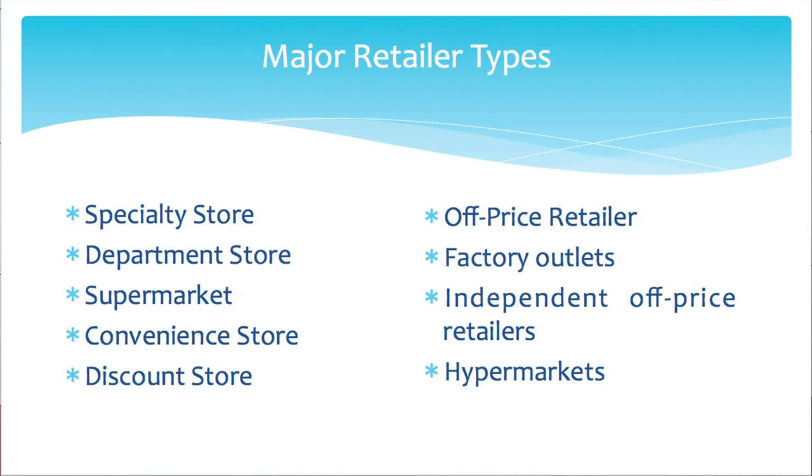For example, in Guwahati we have Big Bazaar and Trends — these are kinds of supermarkets. Then convenience stores are relatively small stores located near residential areas, open for long hours and carrying a limited line of high-turnover convenience products at slightly higher prices — like our next-door small retail outlets where we can purchase matchboxes, bread, butter, and similar things.